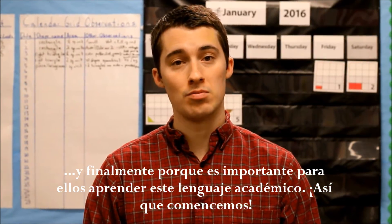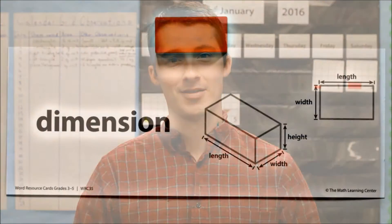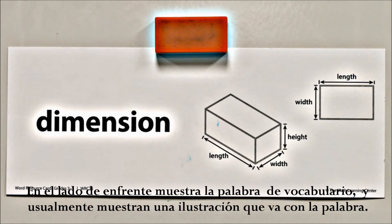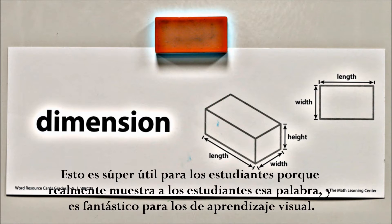So let's get started. Within every Bridges lesson, teachers use vocabulary cards with the kids that have a front and back side. On the front, it will show the vocabulary word and will also usually show an illustration that goes along with that word. This is super helpful for students because it really shows the students that word and is great for visual learners.